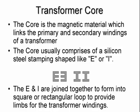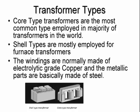The transformer core is a magnetic material which links the primary and secondary, and it can have a variety of shapes and forms. We have core type transformers, which are the most commonly used — the windings go around the limbs. Then we have shell type transformers, used in furnace transformers, where the core goes around the turns. The windings are made out of electrical grade copper, and the metallic parts for 50 Hz are made out of laminated steel.